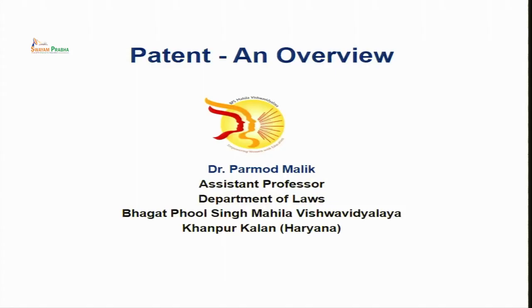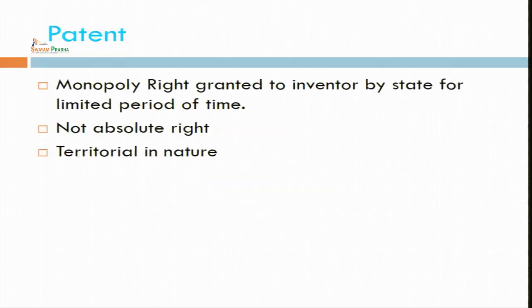Hello everyone. Today we are going to discuss another subject matter of intellectual property right, that is patent. Under patent, we will start with the definition. Patent is a monopoly right granted to the inventor by the state or government for a limited period of time. That limited period is 20 years.